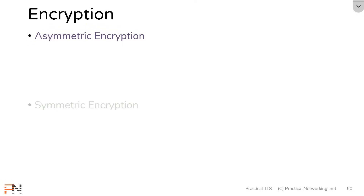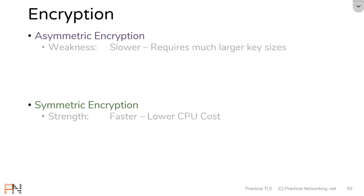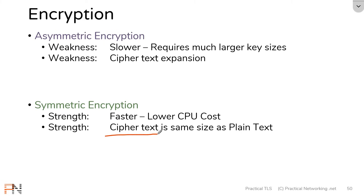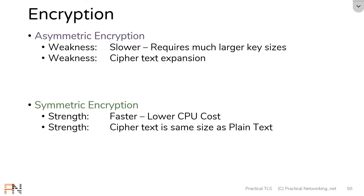Now let's talk about the strengths and weaknesses of each method of key-based encryption. First, symmetric encryption is faster — it's easier for a CPU to do the math and work with symmetric encryption algorithms, whereas asymmetric encryption is slower; it involves harder math and uses bigger keys. Additionally, symmetric encryption has the interesting property that the ciphertext ends up being approximately the same size as the plaintext — so it doesn't double or triple the amount of data you send on the wire. Asymmetric encryption has an unfortunate property called ciphertext expansion, where what you encrypt typically ends up larger size-wise than your original plaintext.